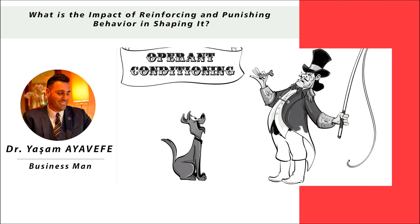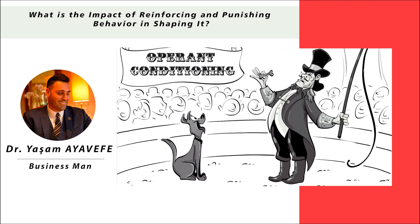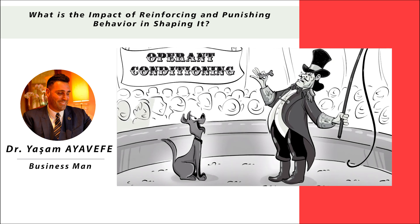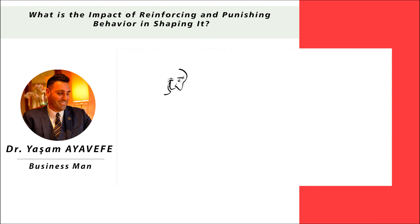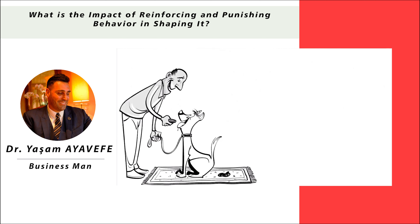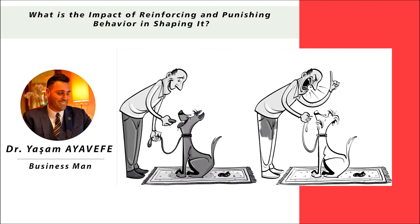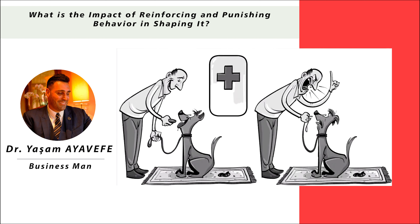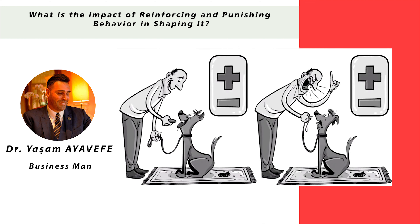If we remember Pavlov's dog, it's a reflexive reaction. For example, if a dog poops on a carpet, we can either provide reinforcement so the dog does it again, or punishment so the dog stops. Both reinforcement and punishment can either be positive or negative, which means we have four possible ways to teach this dog a lesson.